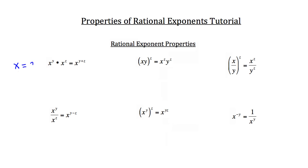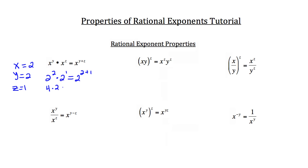Let's say x is equal to 2, y is equal to 2, and z is equal to 1. So if I had x to the y power — 2 squared — times 2 to the z power, which is 1, it should equal x to the y plus z, so 2 to the 2 plus 1. 2 squared is 4, times 2 to the first power, which is 2, equals 2 raised to 2 plus 1 — so 2 raised to the third power.